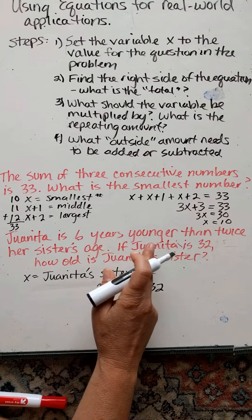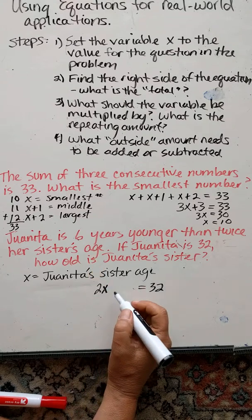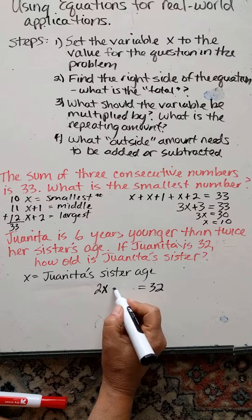So Juanita is 6 years younger than twice her sister's age. So here's twice her sister's age. To say 6 years younger, we would say minus 6.